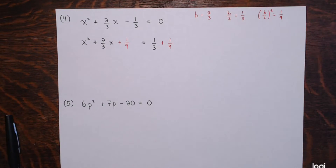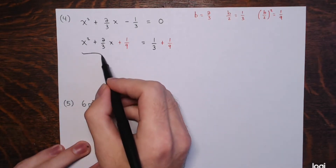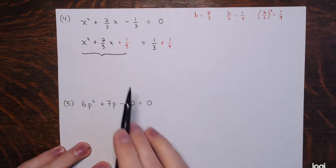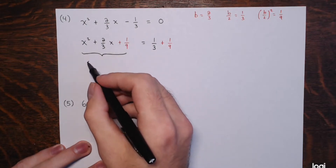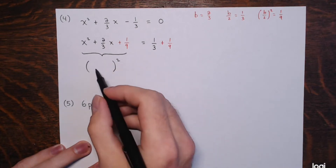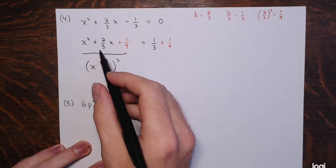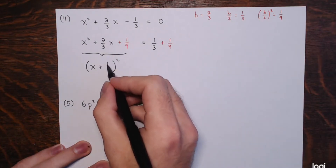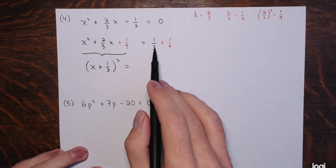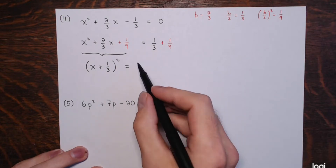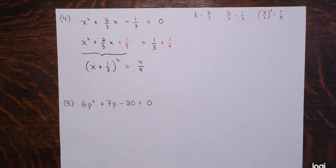The left side x² + (2/3)x + 1/9 is a perfect square trinomial. The variable x plus half of b (which is 1/3) gives (x + 1/3)². On the right: 1/3 + 1/9 = 3/9 + 1/9 = 4/9. So (x + 1/3)² = 4/9.